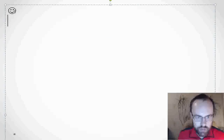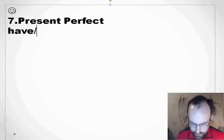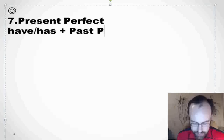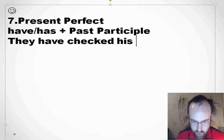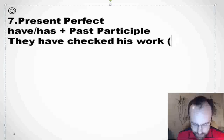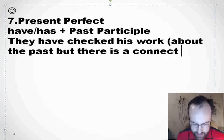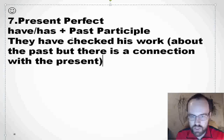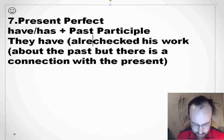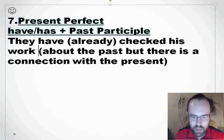Now, perfect tenses. Present perfect — how do we form it? Have or has plus past participle. For example: they have checked his work. We normally use it with different time markers. It's about the past, but there is a connection with the present — that's an important thing. We use it with markers such as 'already' and 'just.' They have already checked his work.